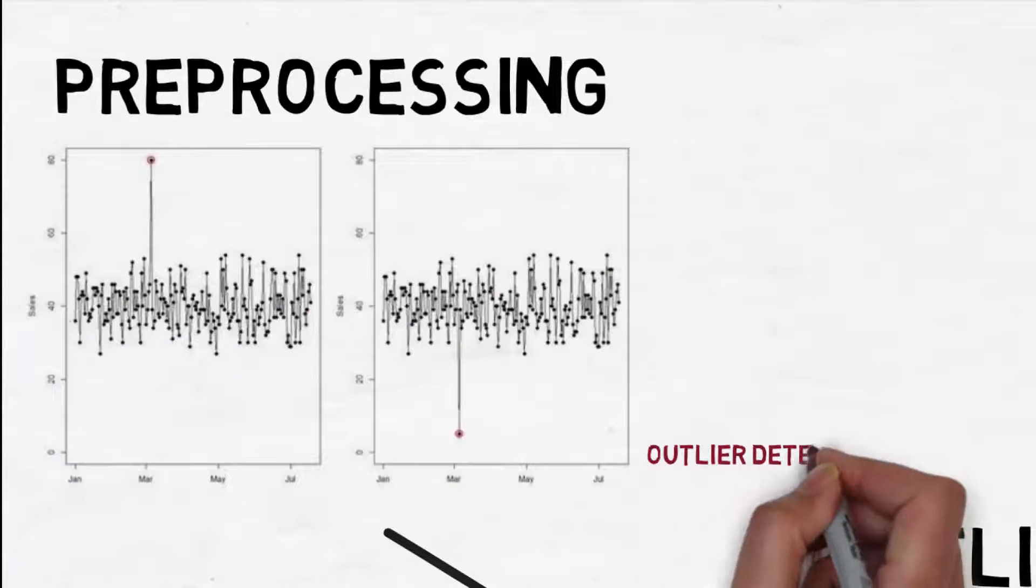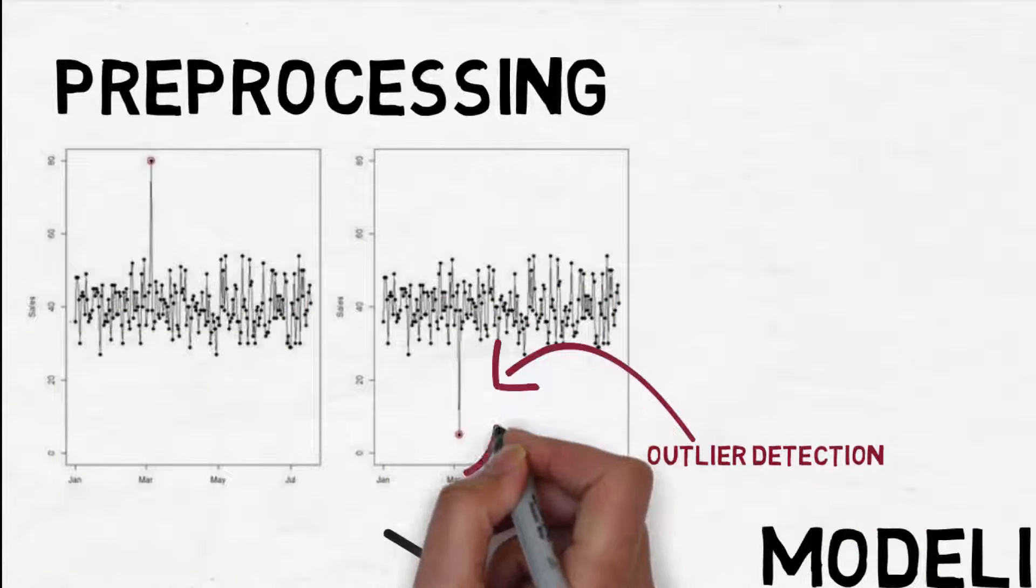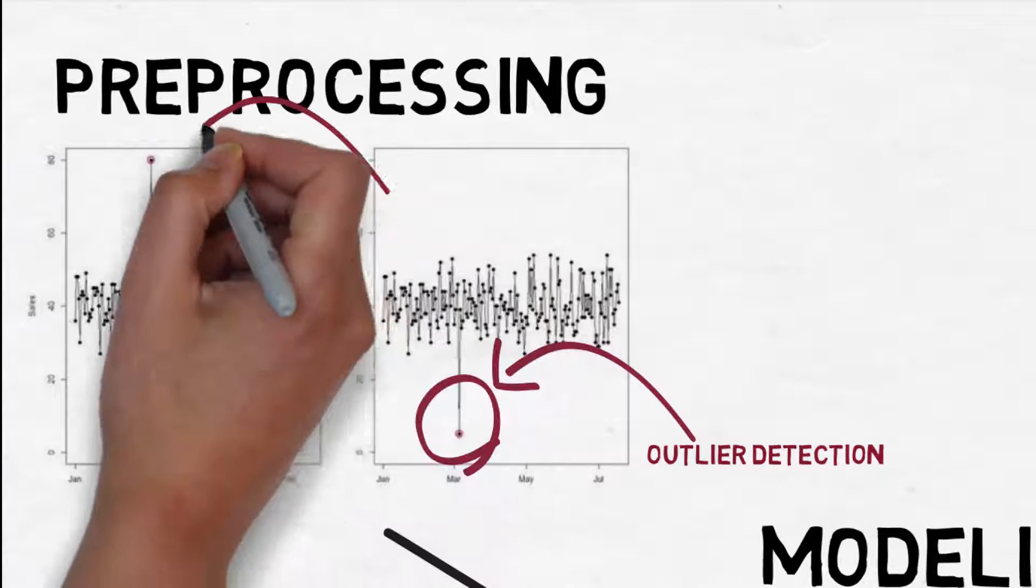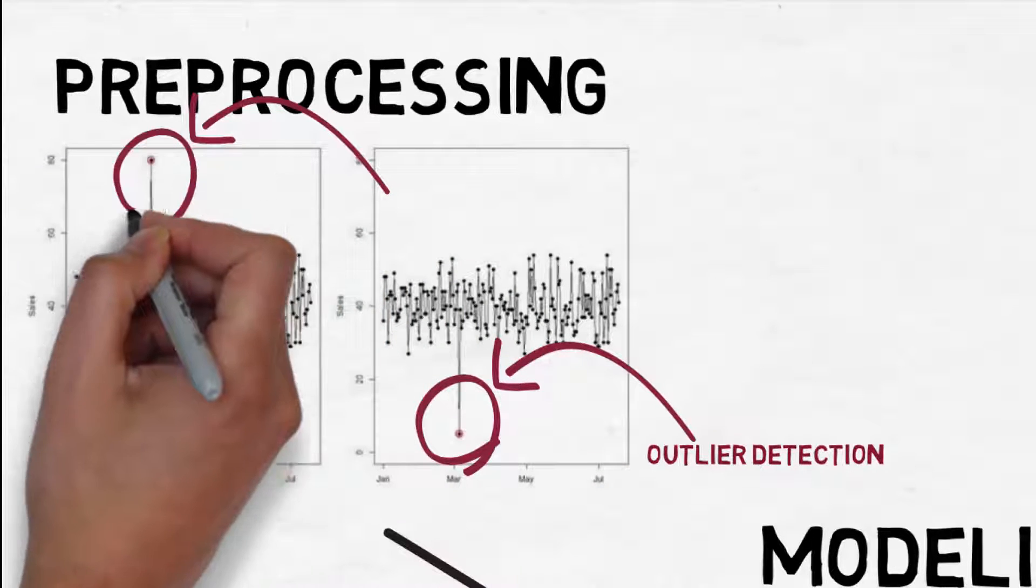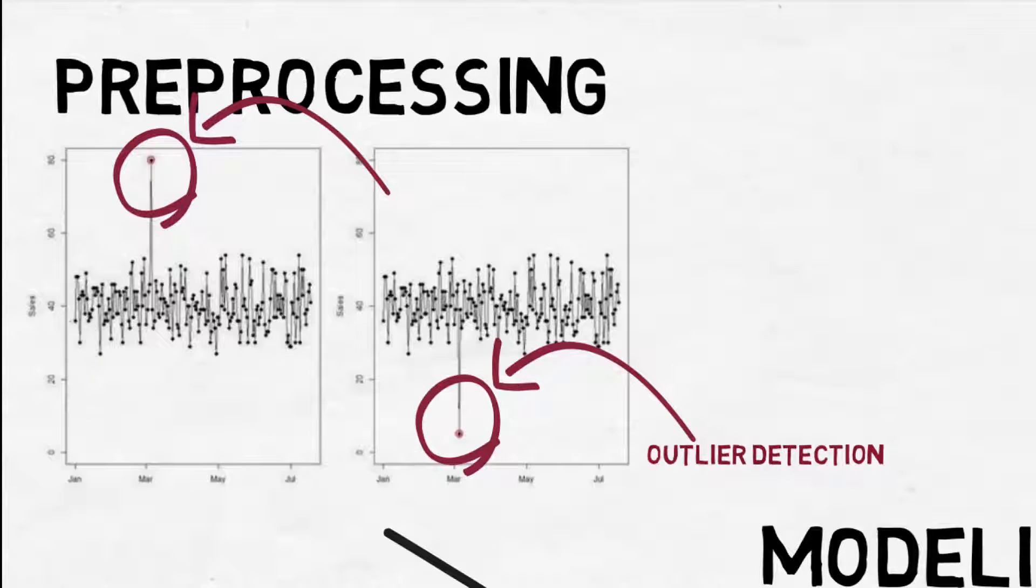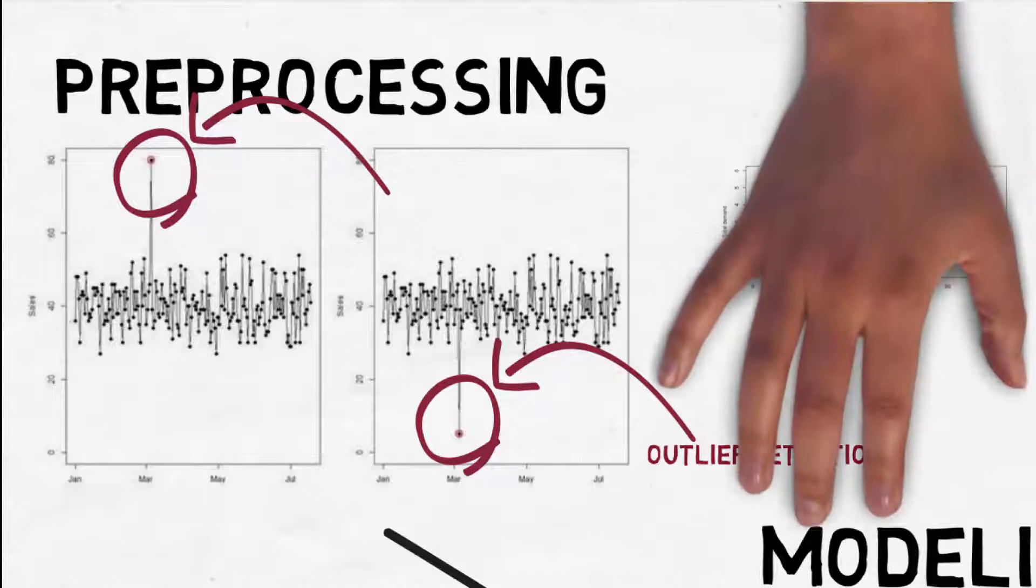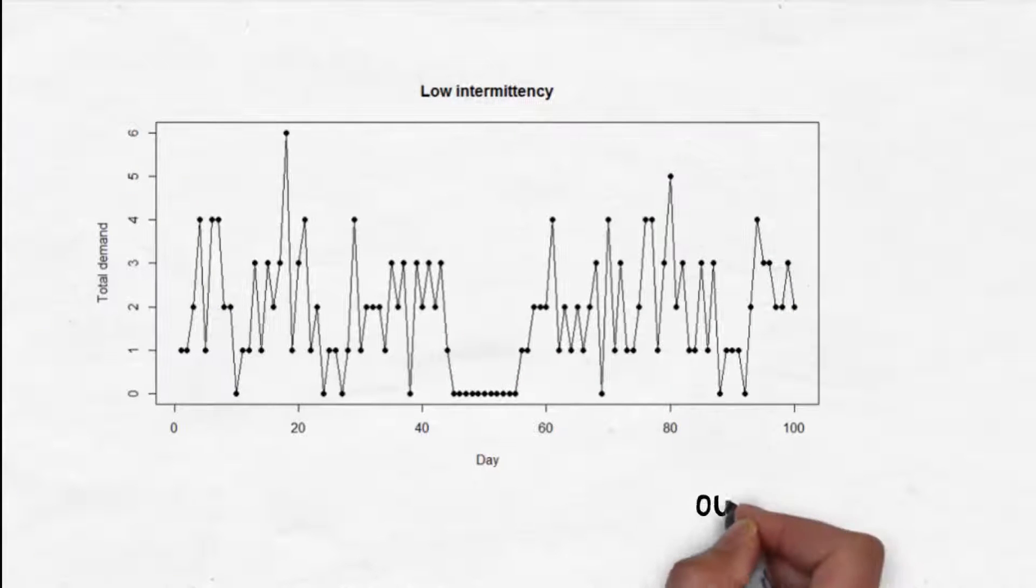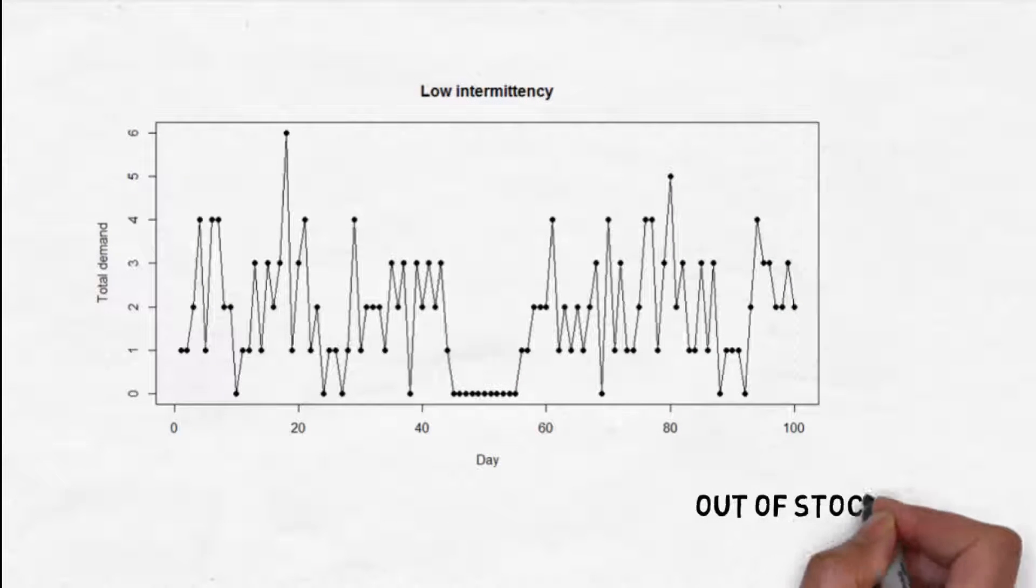One example is outlier detection. Say a football team comes into your store and purchases all of your orange juice inventory on a Sunday morning, leaving you with zero stock for the rest of the day. This is not normal. It's an outlier. Another example is out-of-stock detection. This kicks in after multiple days with zero sales, basically when more consecutive days with zero sales happen than normally expected.